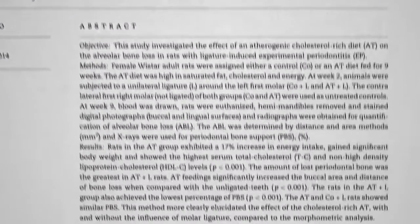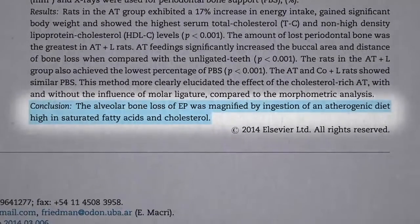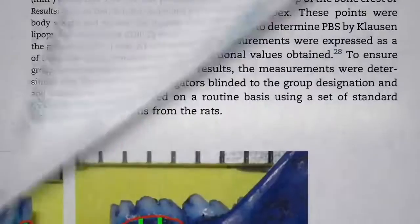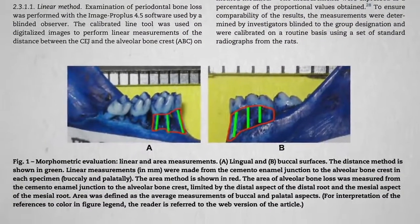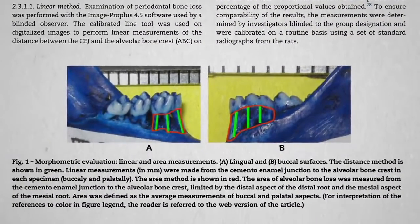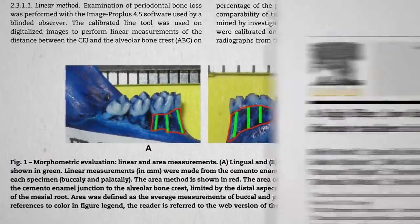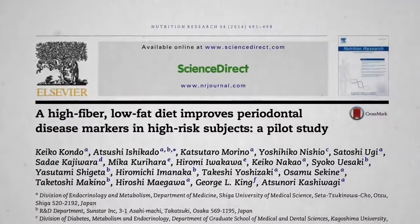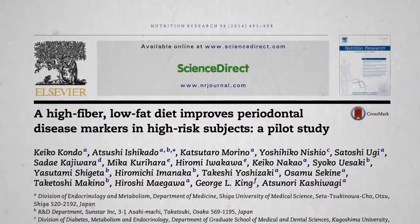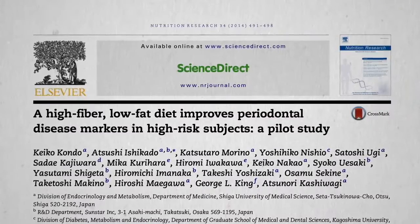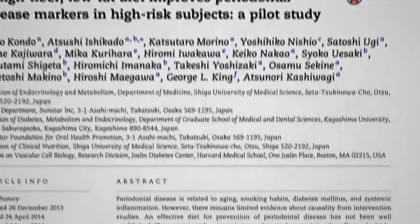And bone loss was indeed magnified by a diet high in saturated fat and cholesterol — but that's a weird looking jaw, because it was a study done on rats. This is what I was looking for. Though the title kind of ruins the suspense: a high-fiber, low-fat diet improves periodontal disease markers, in terms of probing depth, clinical attachment loss, and bleeding on probing — all the standard measures.